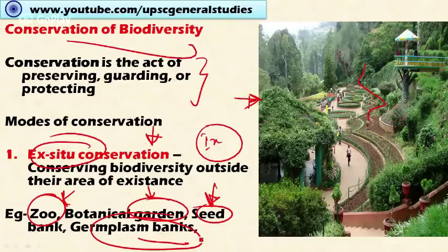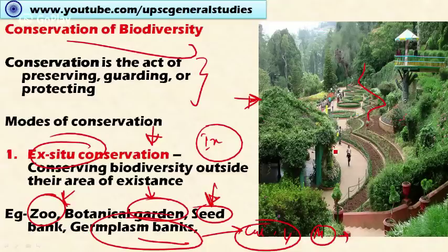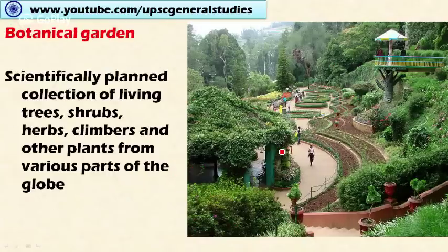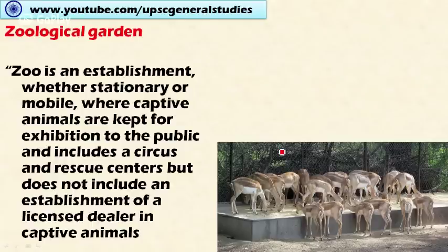In a germplasm bank, various plants can be propagated vegetatively — for example by use of cuttings, layering, and other means. Micropropagation propagules are also stored in germplasm banks using cryogenic techniques. For animal species, sperms and ovules are also stored for future use in breeding programs. This germplasm conservation is a form of ex-situ conservation.